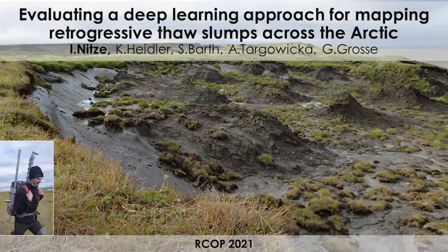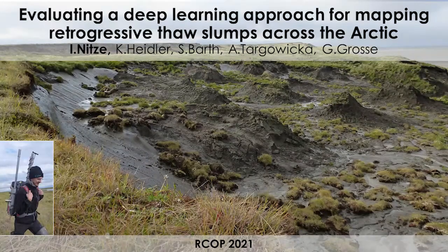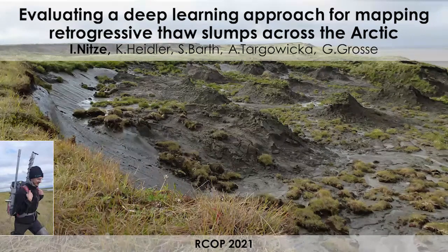Hello and welcome everybody to our talk for this year's regional conference in Permafrost. I would like to give you my talk about a recent study — accepted for publication — on evaluating a deep learning approach for mapping retrogressive thaw slumps across the Arctic. I'm Ingmar Nitze from the Alfred Wegener Institute. I would like to thank my colleagues Konrad Heidler, Sophia Barth, Alex Tagovitska, and Kido Große for supporting me, especially Konrad who did a lot of the coding work.